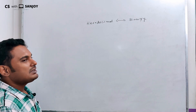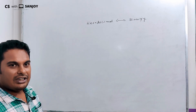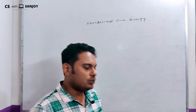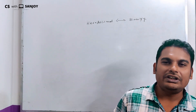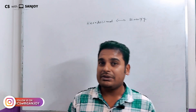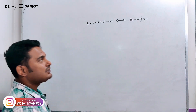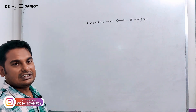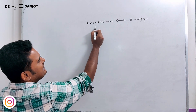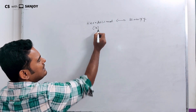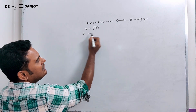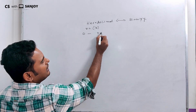Now, what is hexadecimal? Hexa means 6 and decimal means 10, so hexadecimal is 6 plus 10 which is 16. The hexadecimal number system has a base of 16. R is 16, so the range is 0 to R minus 1.